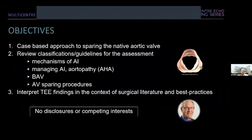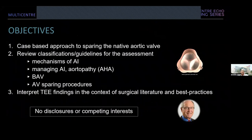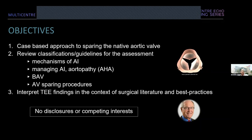Over the course of today's session, we'll use a case-based approach to look at cases involving sparing of the native aortic valve. We'll review classification guidelines for the assessment of mechanisms of AI, managing AI aortopathy from the American Heart Association, how to assess the bicuspid aortic valve, and how to assess for aortic valve sparing procedures. We'll use mostly TEE images in the context of surgical literature and best practices to explore these topics.